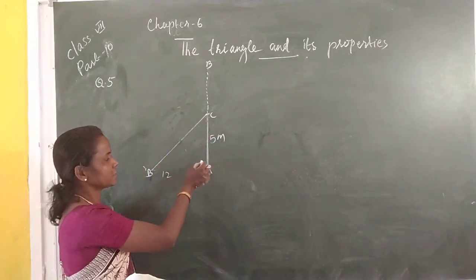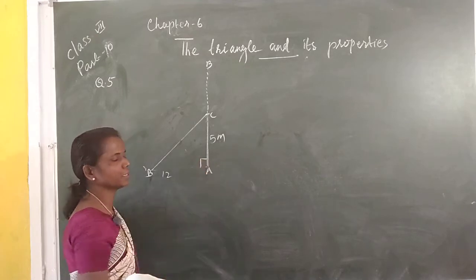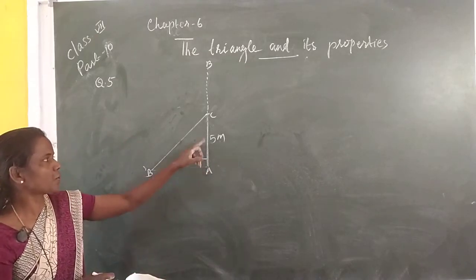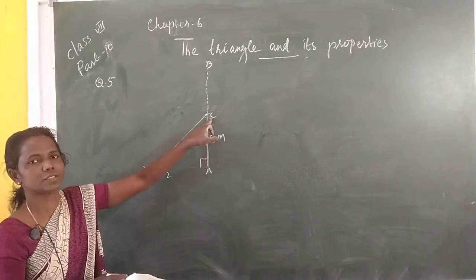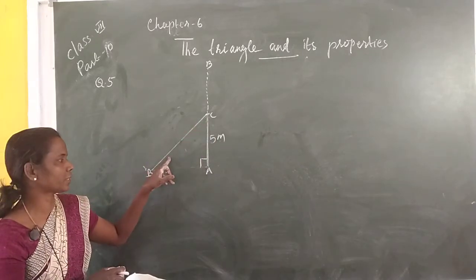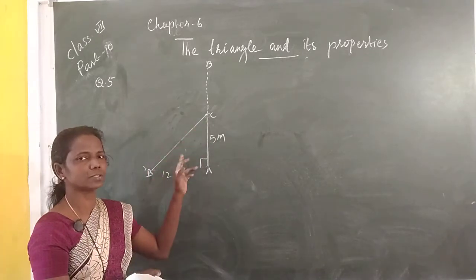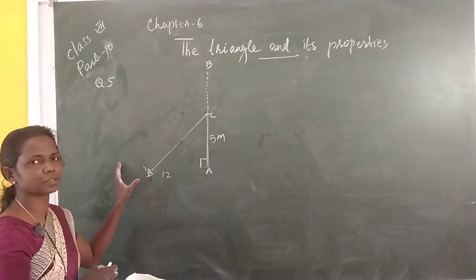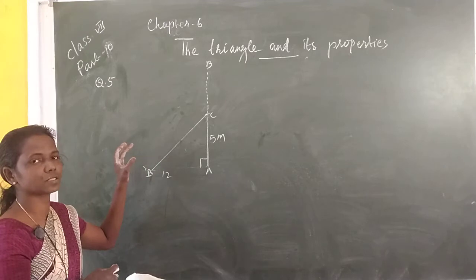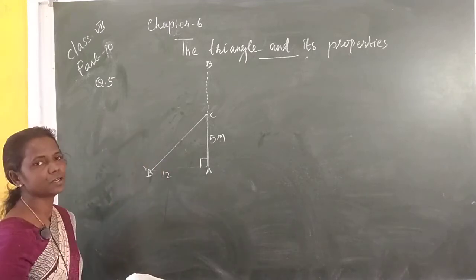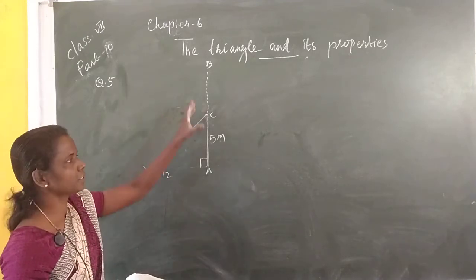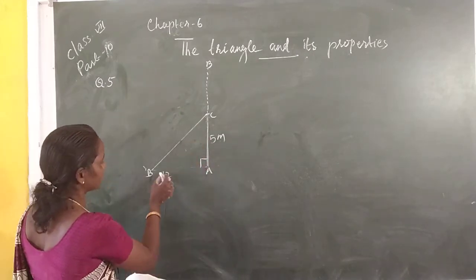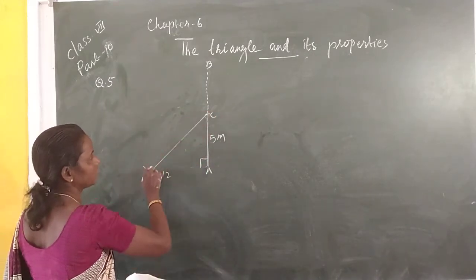Find the original height of the tree. Here, this angle A is 90 degrees. So, suppose this is B. This is the height of the tree — these two sides are known. By Pythagoras property, we can find out the original height of the tree. First we find out C.